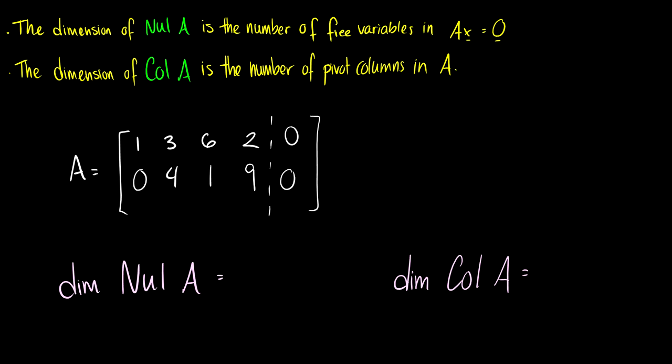Now we need to talk about the dimension of the null space and the column space. The dimension of the null space is the number of free variables in the equation Ax = 0, while the dimension of the column space is the number of pivot columns in A.